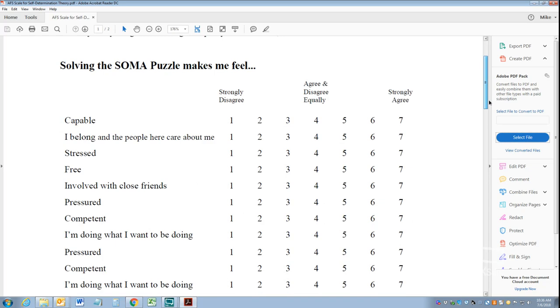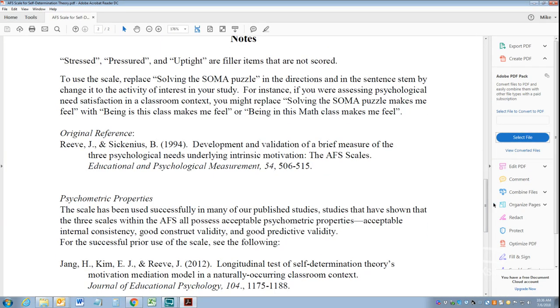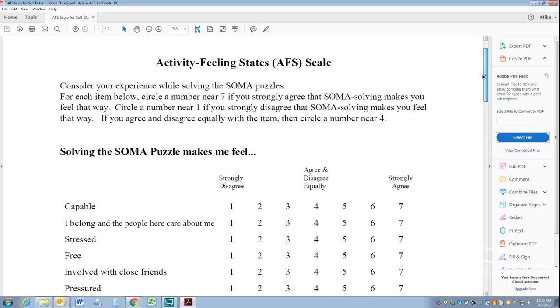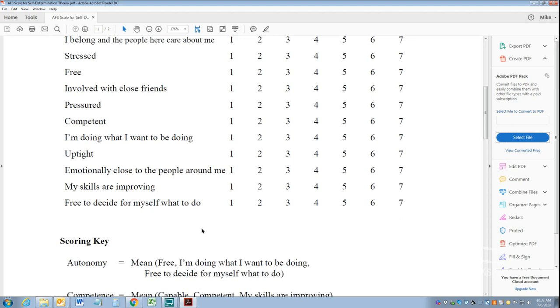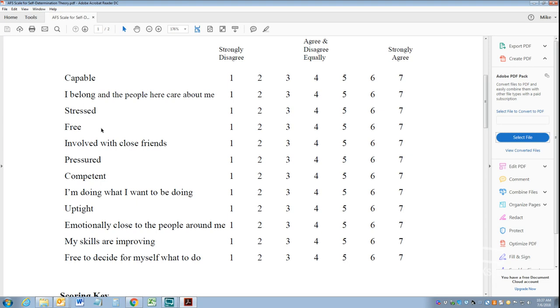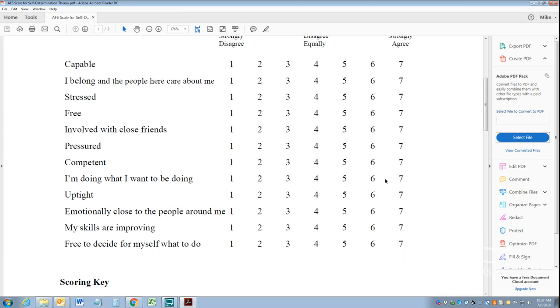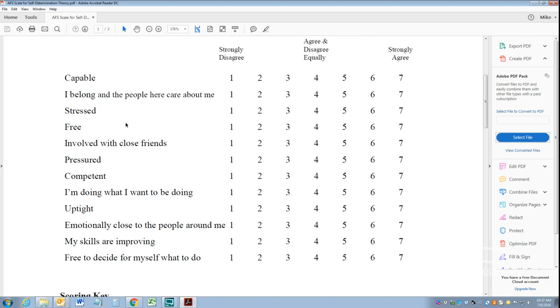So the AFS scale for Self-Determination Theory, this is kind of an inventory that you can take yourself. And there's no assignment required with this because it is kind of just a supplement to the reading already. And so I'm not going to add an assignment because I feel like you guys have a ton of work to do already this week. So anyways, I just want to show it to you nonetheless, so you can understand what we're talking about here. So in this, this was created by a guy named Reeve. Yeah, there he is. Sickinius and Reeve.